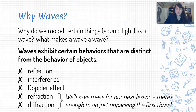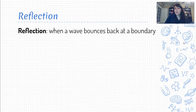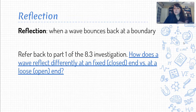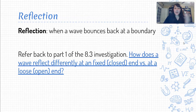So getting into some of those behaviors of waves, the first one — probably the gentlest and easiest to understand — is the idea of reflection, which is the phenomenon where a wave bounces back at a boundary. It's going along through space, it hits something, and then the wave travels back again in the same direction that it came from. We started looking at that in the investigation, where you had a chance to try sending waves down along a string. So let's revisit how a wave reflects differently at a fixed or closed end versus how a wave reflects from a loose or open end.